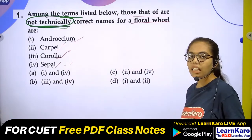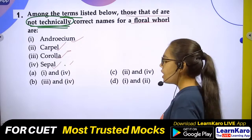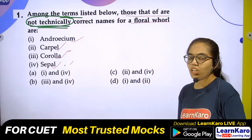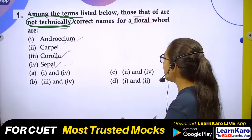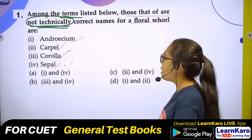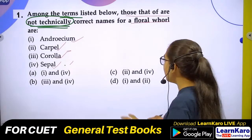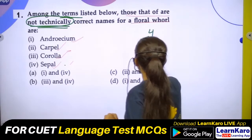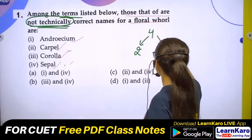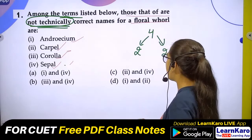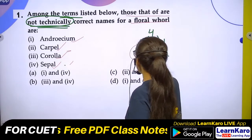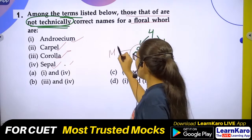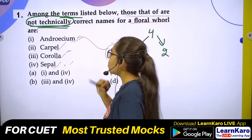Tell us which term is not technically correct. When we studied the flower, we learned that the main flower has 4 parts — 2 reproductive parts and 2 accessory parts. The reproductive parts are the male part (Androecium) and the female part.